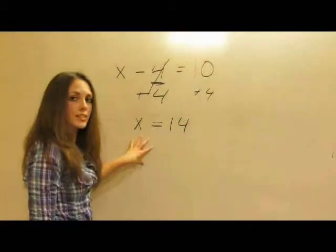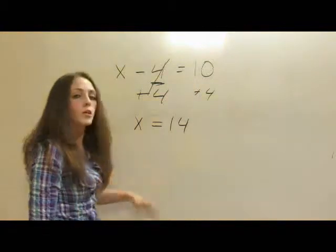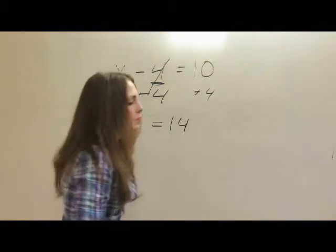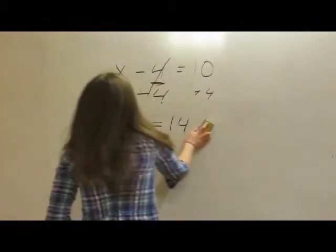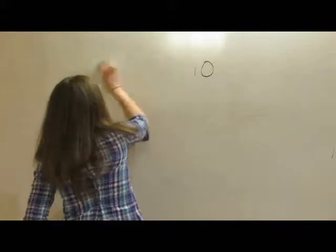Now we can see that we have x by itself on one side of the equation, which means that we've solved for x. So let's get rid of this and try something a little harder just to make sure we get more practice on it.